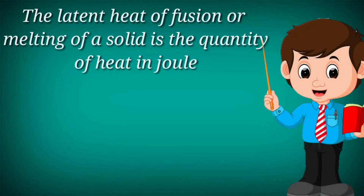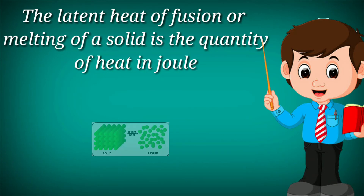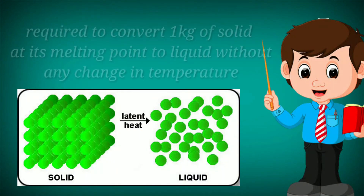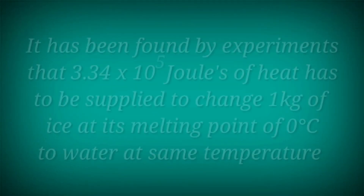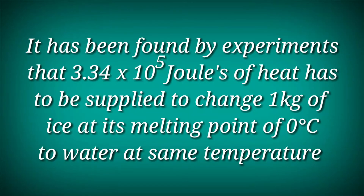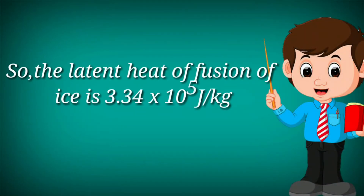The latent heat of fusion or melting of a solid is the quantity of heat in joules required to convert 1 kilogram of the solid at its melting point to liquid without any change in temperature. It has been found by experiments that 3.34 × 10⁵ joules of heat has to be supplied to change 1 kilogram of ice at its melting point of 0°C to water at the same temperature of 0°C. So the latent heat of fusion of ice is 3.34 × 10⁵ joules per kg.